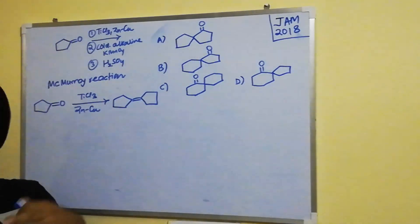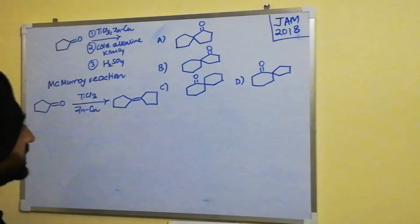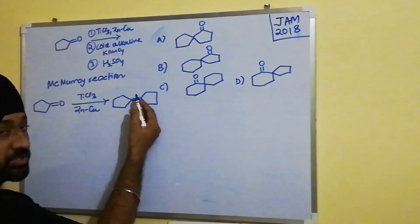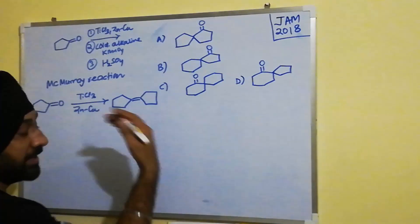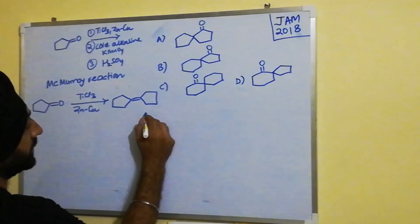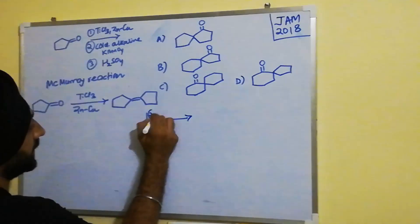...we are treating this alkene with cold KMnO4 which leads to the formation of dihydroxyl derivative. That is, it is carrying out the dihydroxylation of the double bond. This is what is happening.